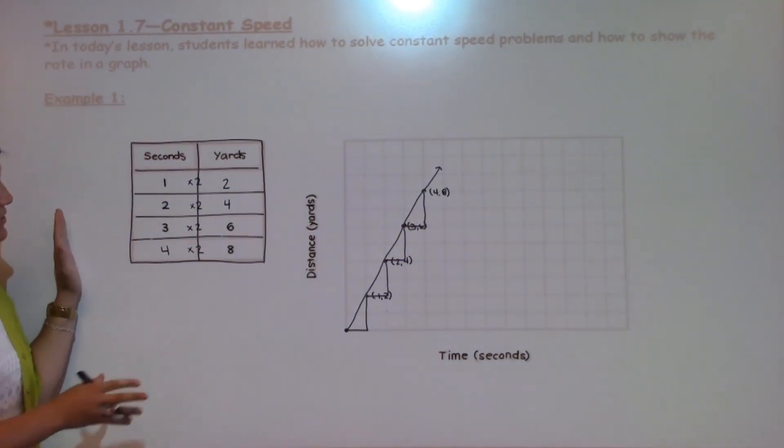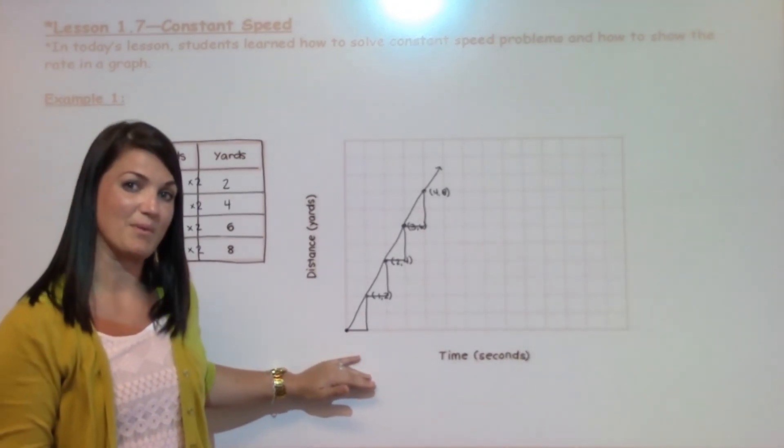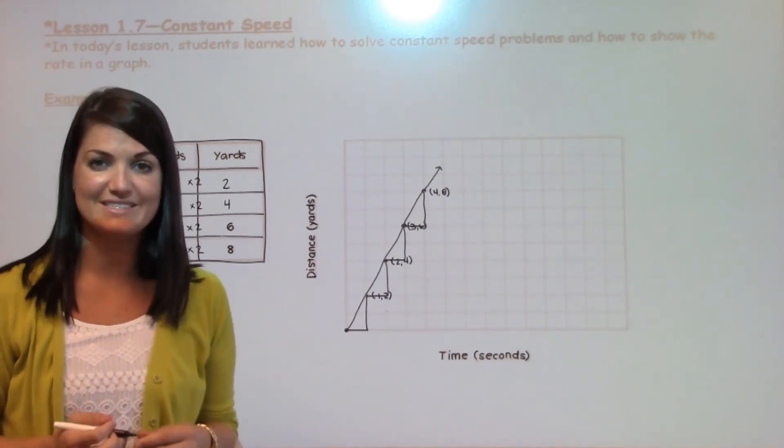This is how you complete a constant rate table to show constant speed and unit rates, and also show that same information in a graph. If you have questions about 1.7, make sure to see your math teacher.